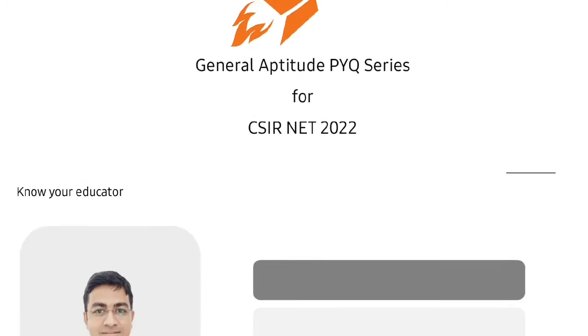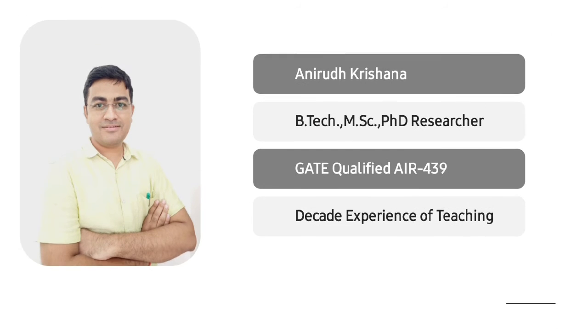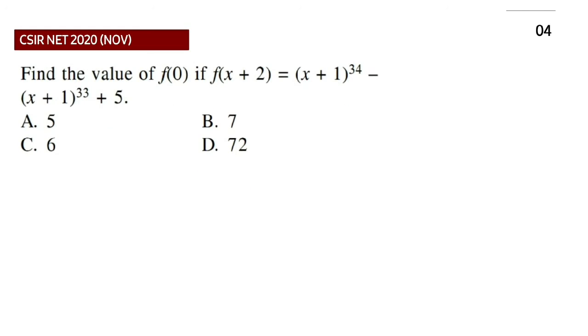Before starting our discussion, first let me introduce myself. My name is Anirut Krishna. I have done B.Tech in Computer Science and completed M.Sc in Mathematics. I also qualified GATE Mathematics exam with all India rank 439, and I have decade experience of teaching in the field of mathematics, basic and advanced mathematics.